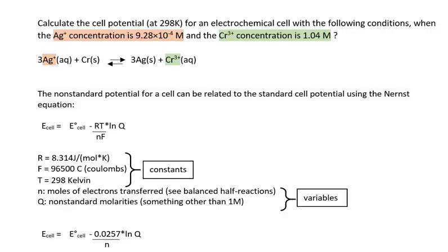In this video, I want to show you how to calculate the cell potential when the concentrations of the reactants and products are something other than 1 molar, the so-called standard condition.